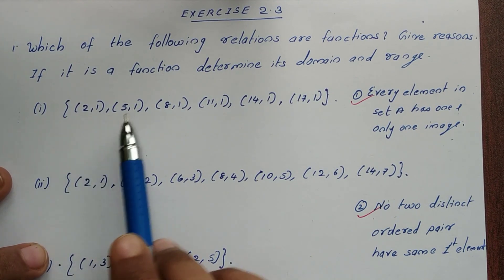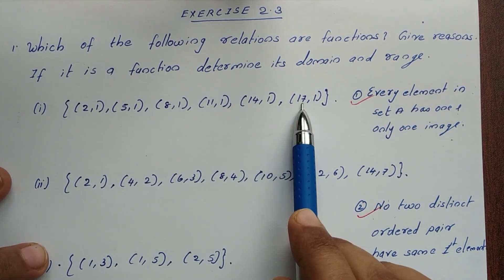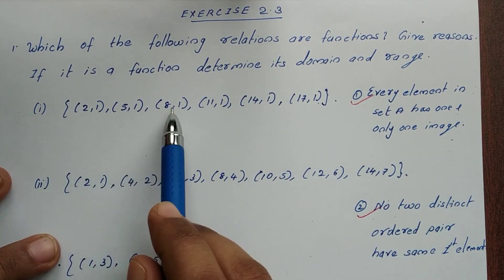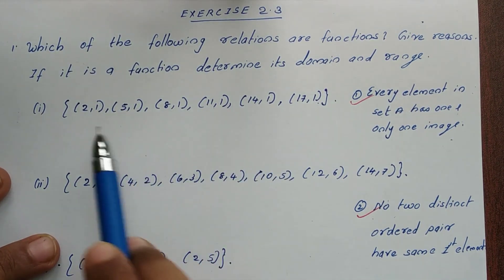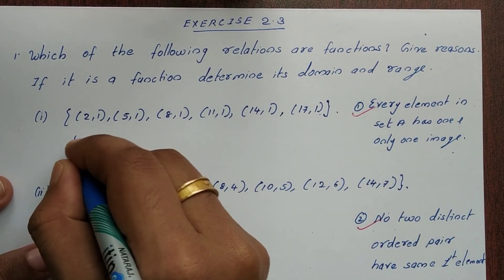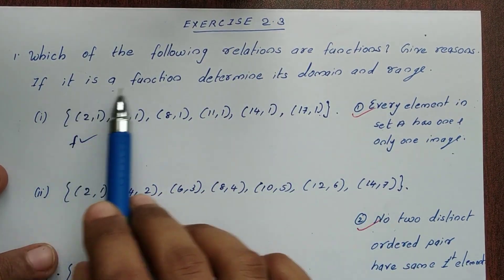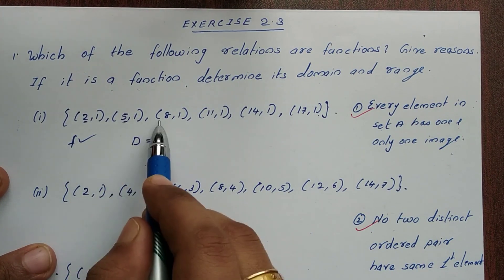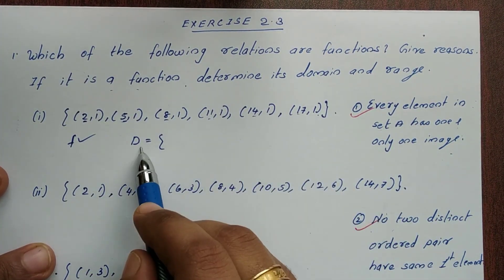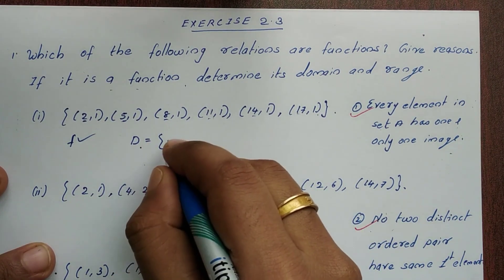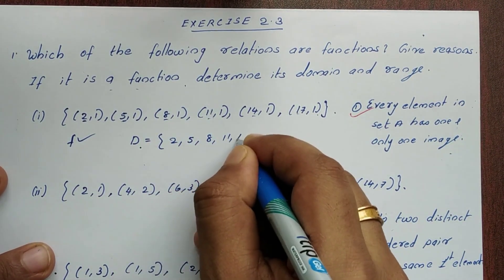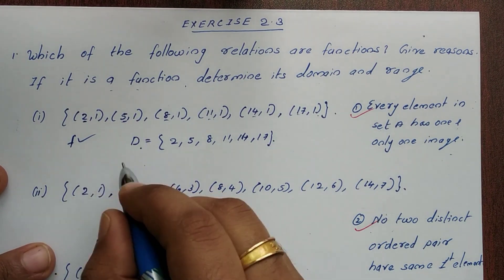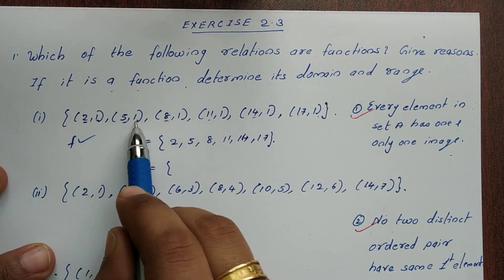First question: the ordered pairs are (2,1), (5,1), (8,1), (11,1), (14,1), (17,1). Every element has one image — no first element repeats. This is a function. The domain is {2, 5, 8, 11, 14, 17} and the range is {1}.